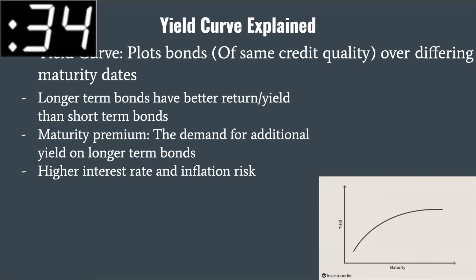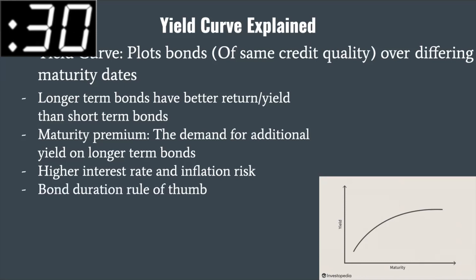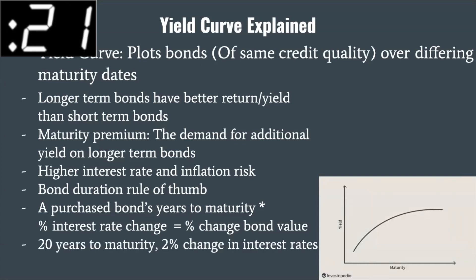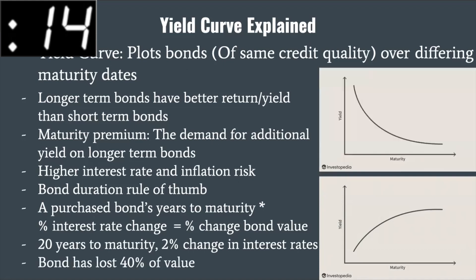To show long term bonds' increased sensitivity to interest rates, we look at the bond duration rule of thumb, which is that a bond's years to maturity times the percent change in interest rates will yield the percent change in the bond's value on the secondary market. So if we take a bond with 20 years to maturity and there's a 2% change in interest rates, the bond loses 40% of its value.